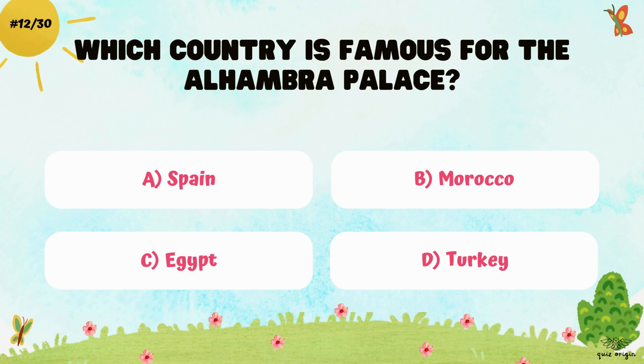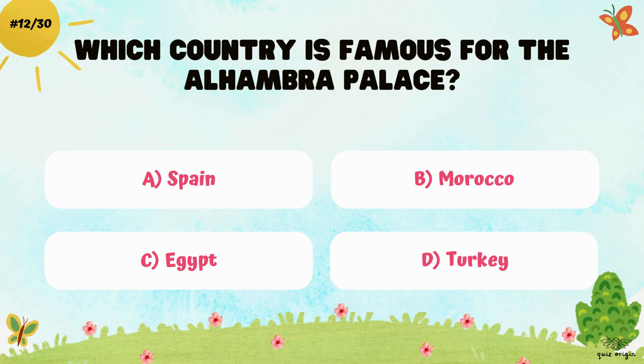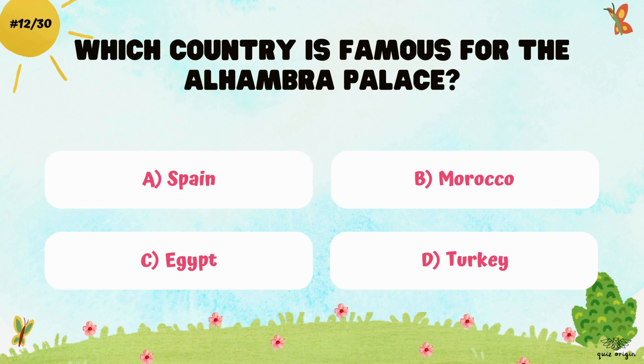Which country is famous for the Alhambra Palace? A. Spain, B. Morocco, C. Egypt, and D. Turkey.